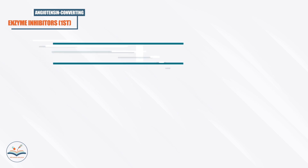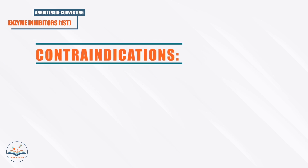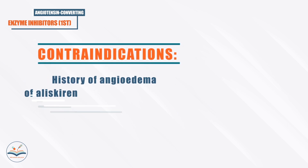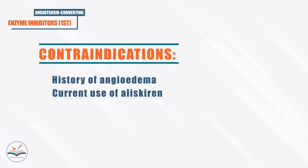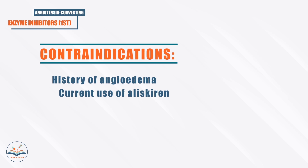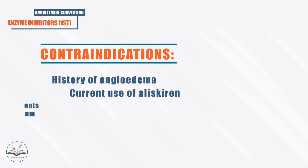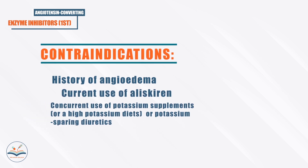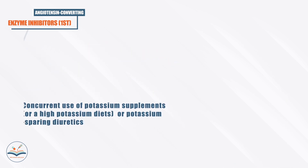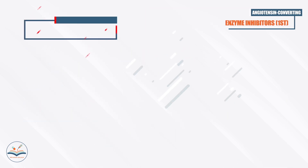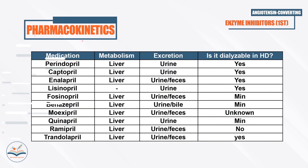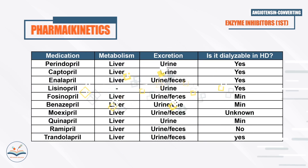ACE inhibitors are contraindicated in patients with a history of angioedema, current use of aliskiren, or concurrent use of potassium supplements or potassium-sparing diuretics. They are metabolized by the liver and excreted by urine and feces, and most of them are dialyzable.